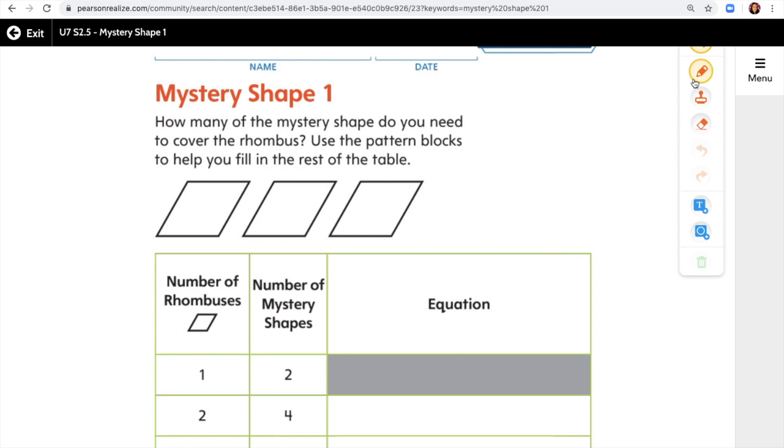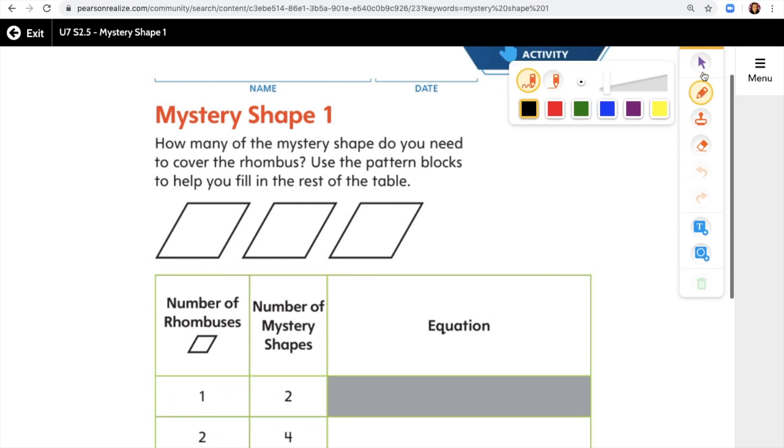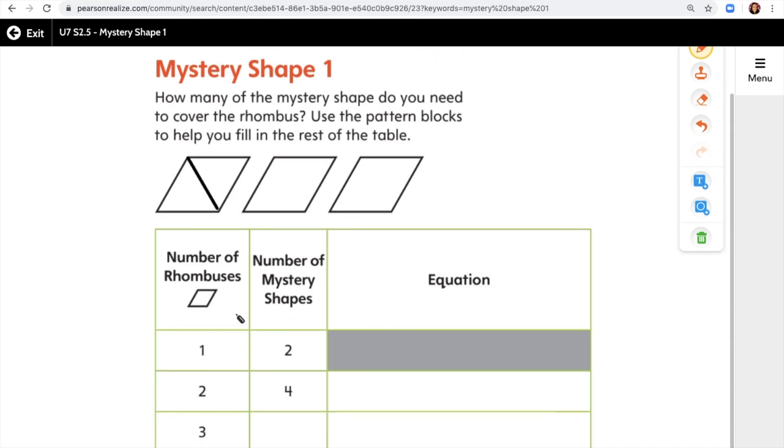So right now I'm going to visualize. It says here one rhombus equals two mystery shapes. So I'm going to ask myself, what shape would I need to cover a rhombus to have two different parts? I'm thinking that this mystery shape is probably a triangle. So if we have two rhombuses that we need to cover, we would need how many triangles? Four.